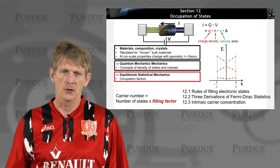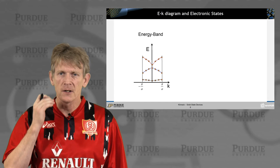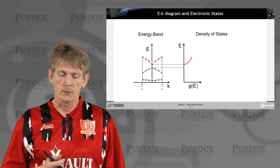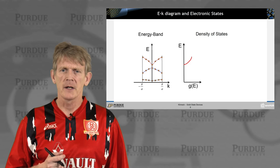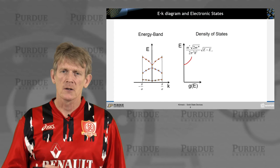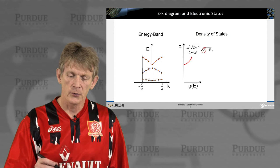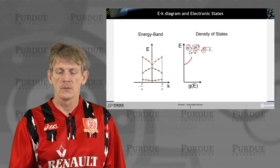Let's look at this EK diagram and the electronic states. You've seen the density of states already, where we've calculated that for the conduction and the valence bands, these states go as the square root of E for three dimensions. For now, I'm going to look at the conduction bands. Conduction band density of states goes as the square root of E, with a prefactor that depends on the effective mass of the system. Nothing new there.